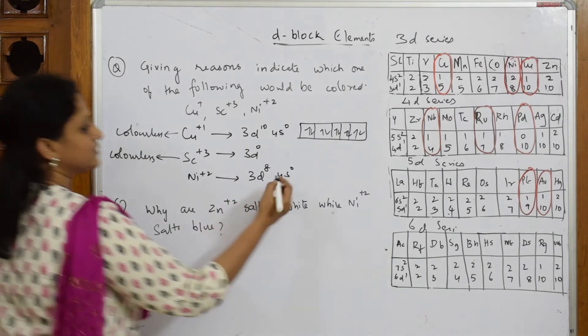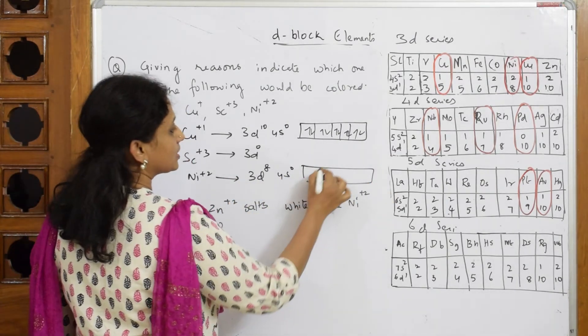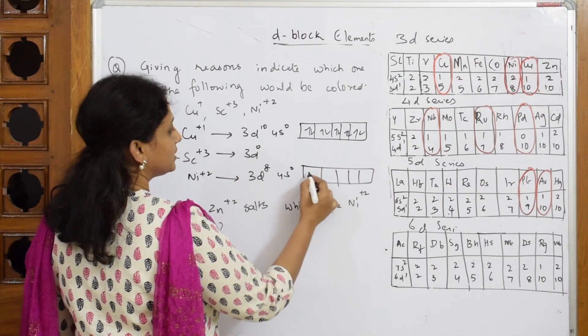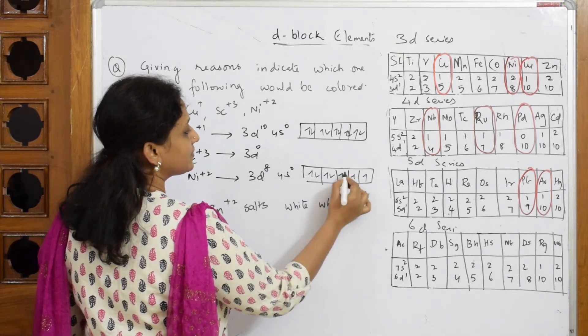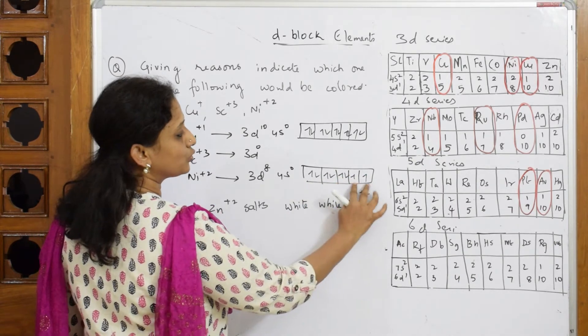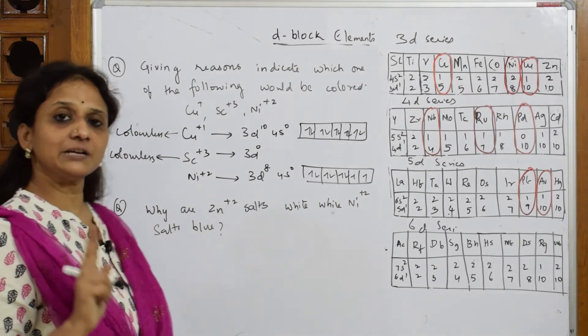Now I have to write for this: 1, 2, 3, 4, 5... 1, 2, 3, 4, 5, 6, 7, 8. How many unpaired electrons do we have? Two. Yes, if it has unpaired electrons, it's going to show d-d transition.